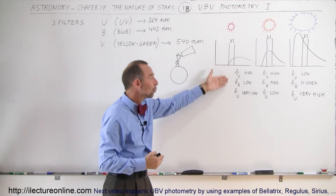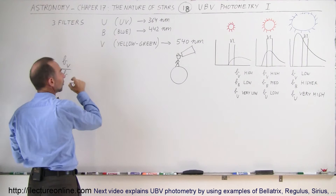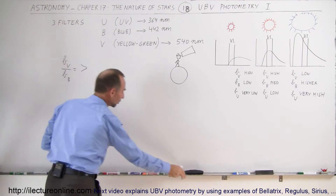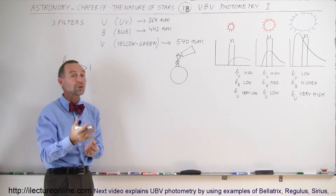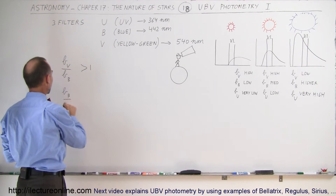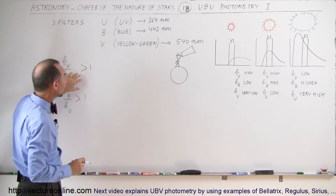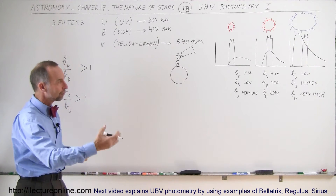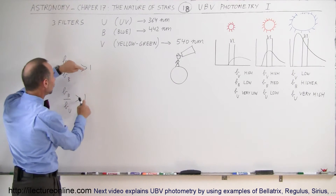We find the ratios of those measurements. We compare the brightness with the visible filter divided by the brightness with the blue filter and find that ratio is greater than one, meaning we get more energy in the visible light spectrum than in the blue. Then comparing brightness in the blue spectrum divided by brightness in the UV spectrum, we again find a ratio greater than one. If that's the case, we conclude it is more of a reddish-looking star — more toward the infrared and red end of the spectrum.